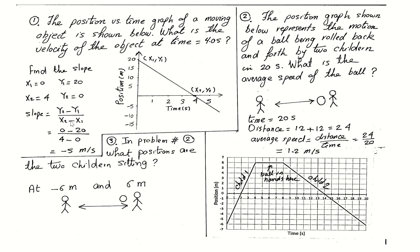To find the slope: y2 minus y1 divided by x2 minus x1 gives us 0 minus 20 divided by 4 minus 0, which equals negative 5 meters per second. The velocity at t equals 4 seconds is negative 5 meters per second. The negative sign means the object is moving in the negative direction.